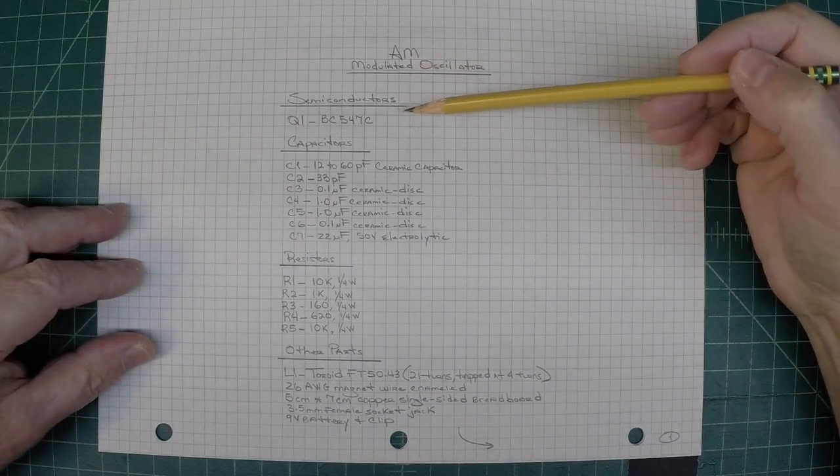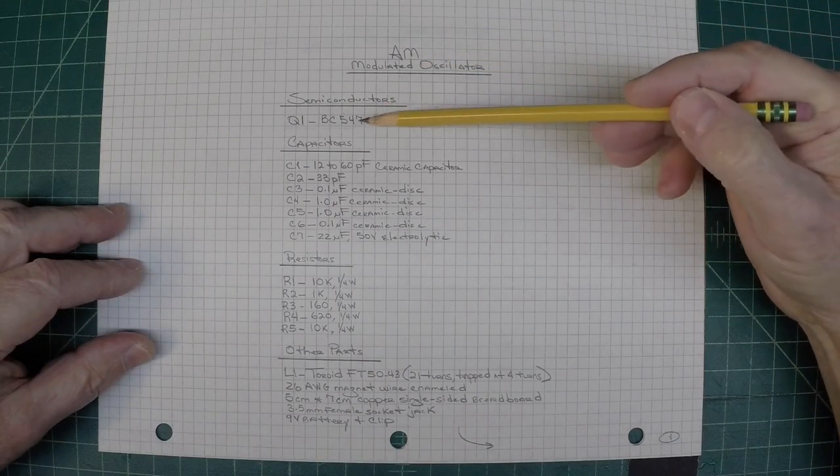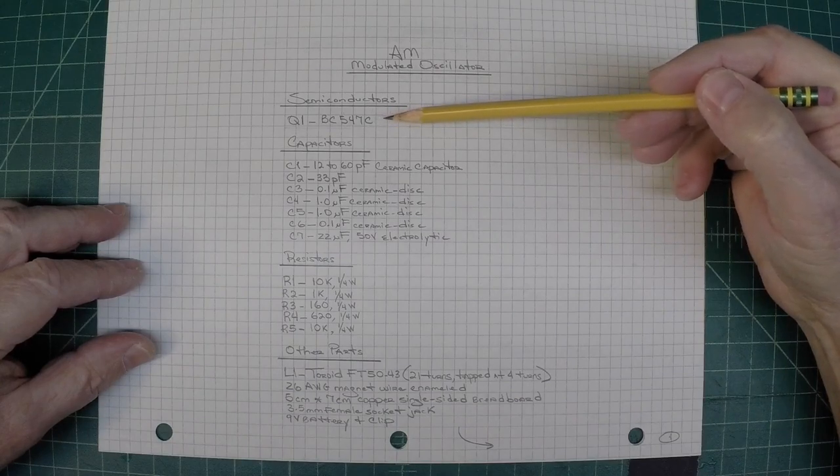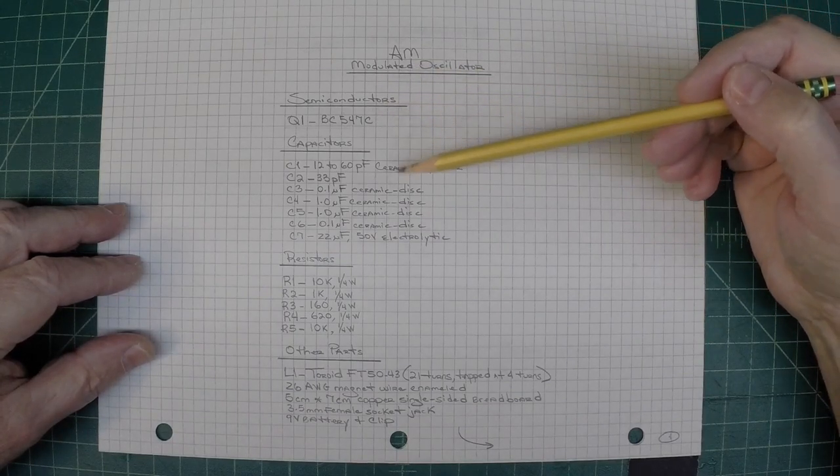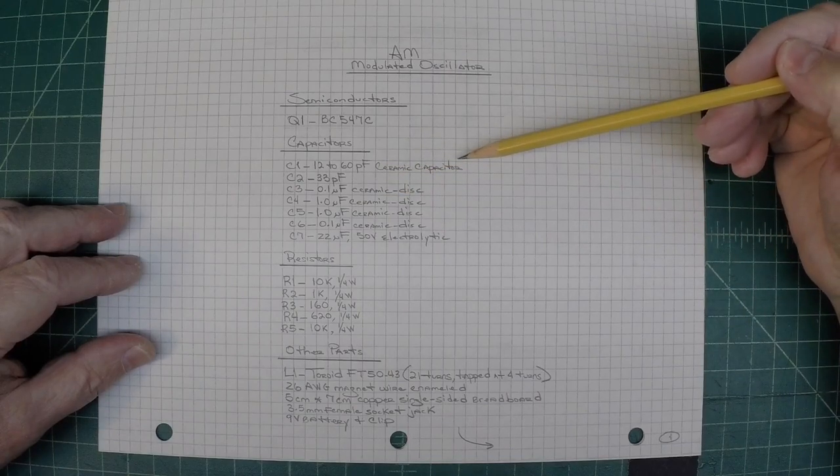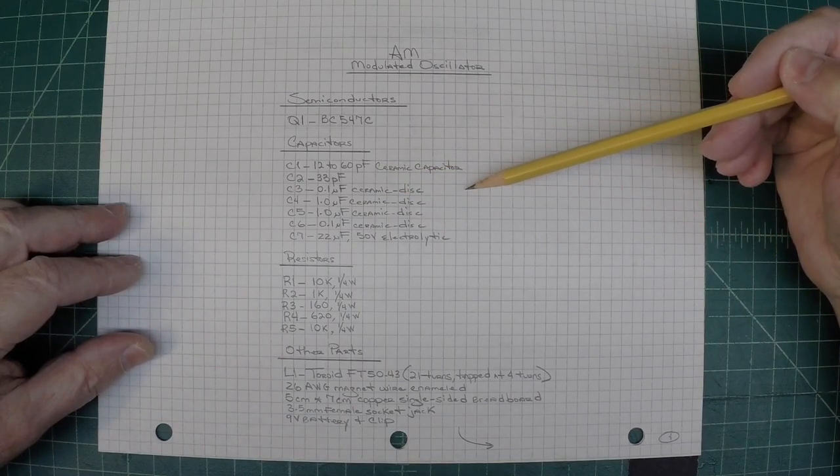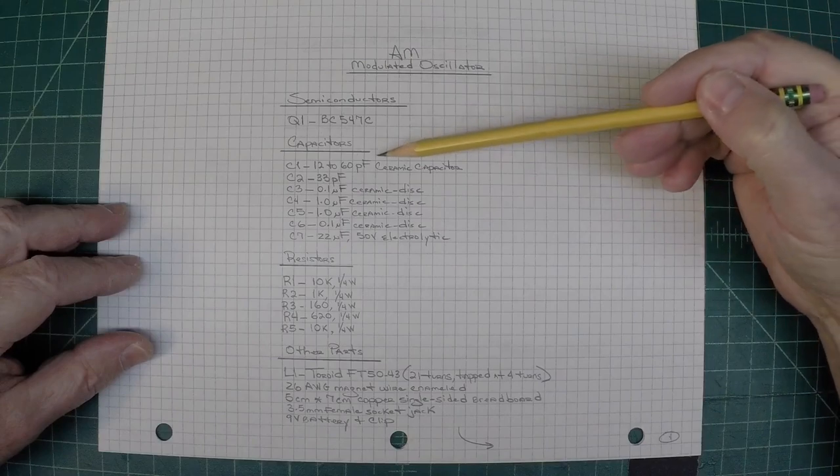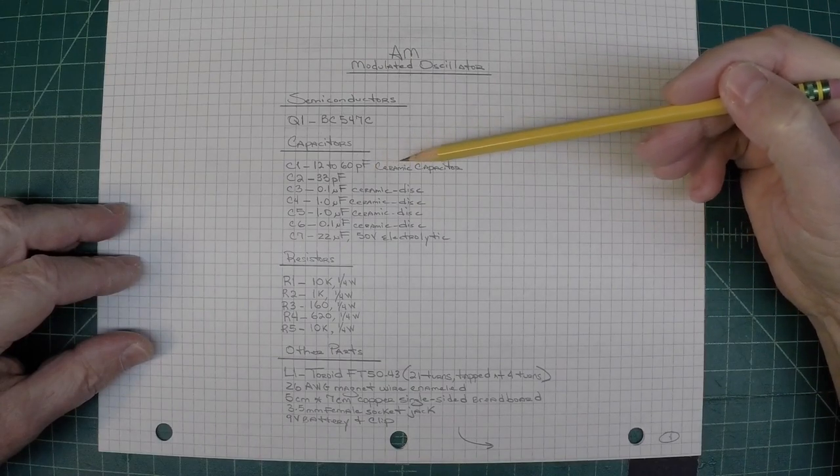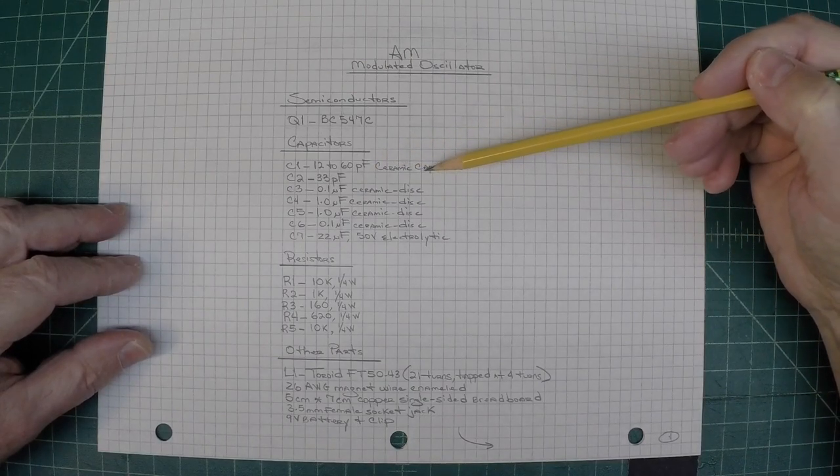Let me throw up the parts list for you real quick and then we'll take a look at the circuit board itself and the layout. Alright, here's the parts list that I just referenced. The BC547C is the only semiconductor used and you can see I've got the various capacitors called out as well.